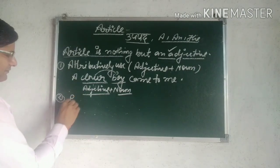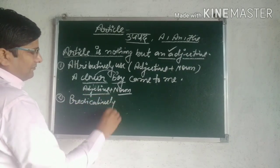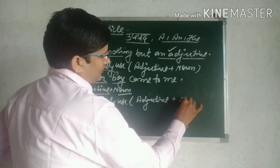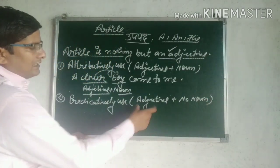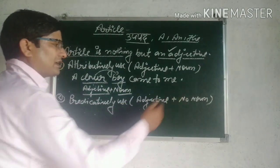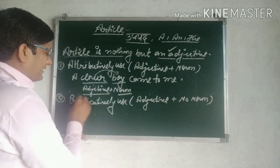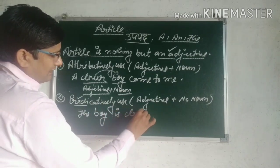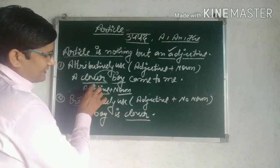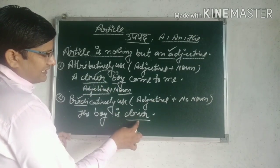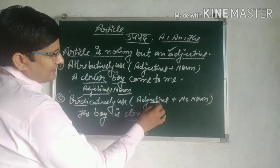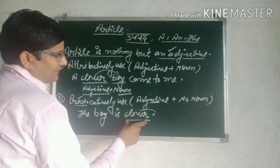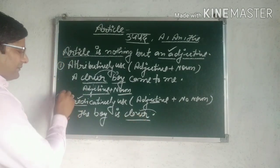Adjective का जो second use है वह predicative use है — Adjective plus no noun. It means there is no noun just after the adjective. Example: 'The boy is clever.' यहाँ clever word adjective के रूप में use हुआ है, but there is no noun just after this adjective. साथ ही यह adjective predicate part में use हुआ है — यह adjective का predicative use होता है.